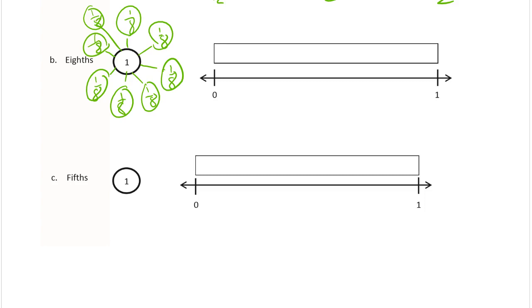And we're going to have to do the same thing for our fraction strip. Let's see, if we fold it in half first, right? And then we fold our halves in half, and then we fold our fourths in half, and that's how we get 8ths.